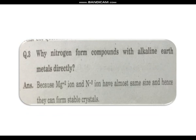Next question: why do nitrogen compounds form with alkaline metals directly? Alkaline metals directly form compounds with nitrogen because magnesium ions and nitrogen ions have almost the same size, and they can form stable crystals.